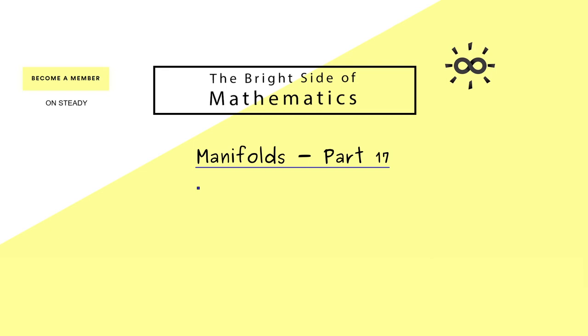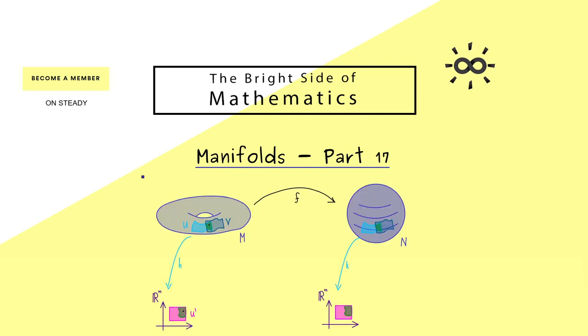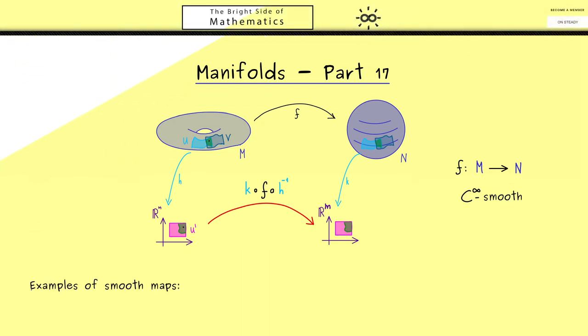For the topic of today, please recall that we have defined smooth maps between manifolds in the last video. Indeed, this was not so complicated, because we only needed two manifolds M and N and a continuous map between them. And then by simply using charts, we could decide if this map is also differentiable or smooth. And then we only have to look at the corresponding map here in Rn. We can generalize this notion easily to other dimensions. And now today we will look at examples.